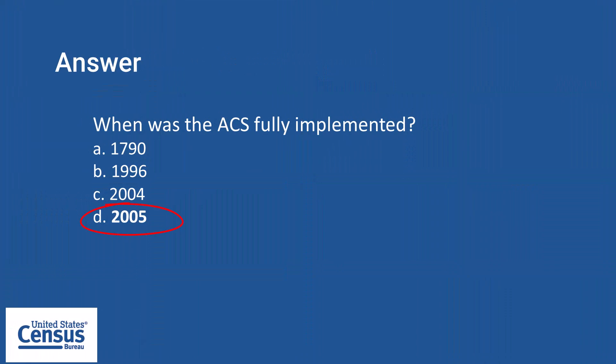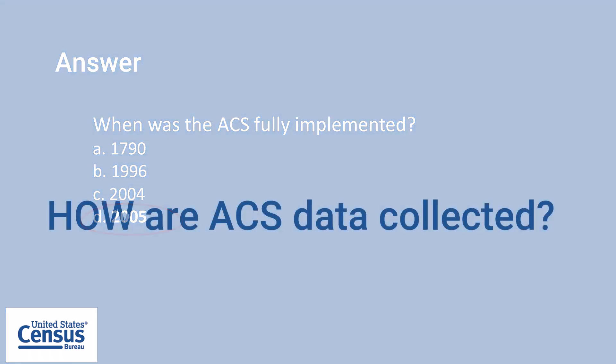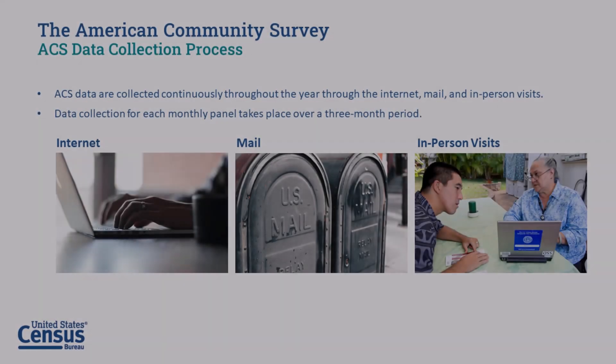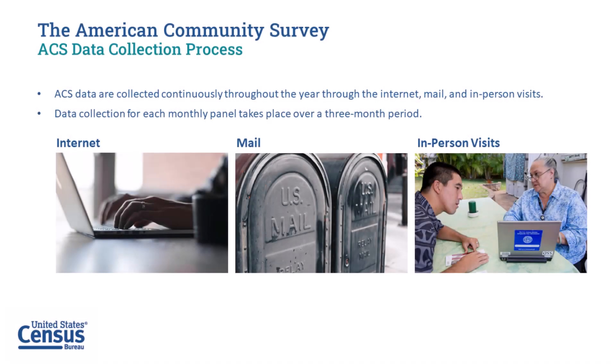The ACS was fully implemented after a period of testing from 1996 to 2004. How are ACS data collected? ACS data are collected throughout the year through the internet, paper questionnaires, and in-person visits from census field representatives.